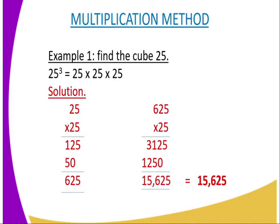example 1, you are required to calculate the cube of 25. What are you supposed to do? You are supposed to multiply 25 by itself three times, meaning that 25 to power 3, that is the cube of 25, it becomes 25 times 25 times 25. And the first solution, you multiply 25 by 25, and you will end up getting 625. That is step number one.